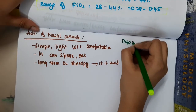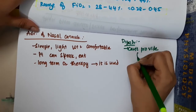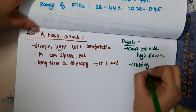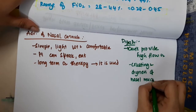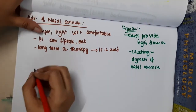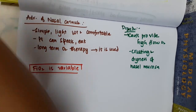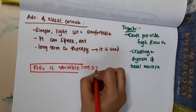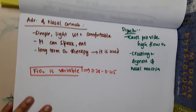Disadvantages of nasal cannula: it cannot provide high flow oxygen, it can cause dryness of the nasal mucosa, and importantly, the FiO2 is variable — in the range of approximately 0.28 to 0.45.